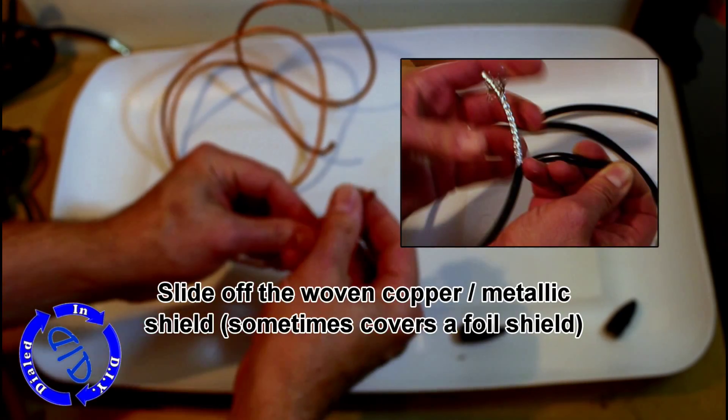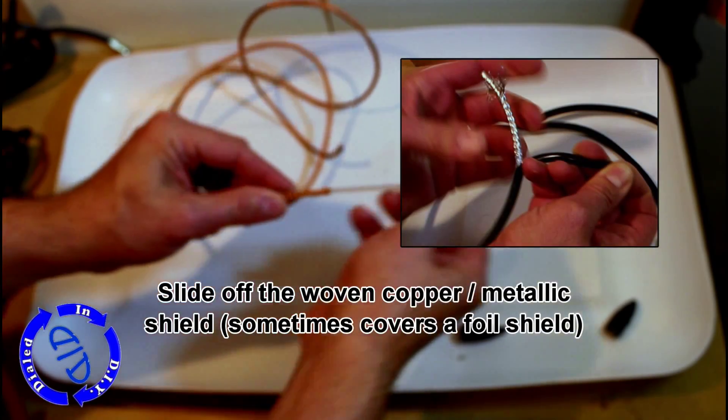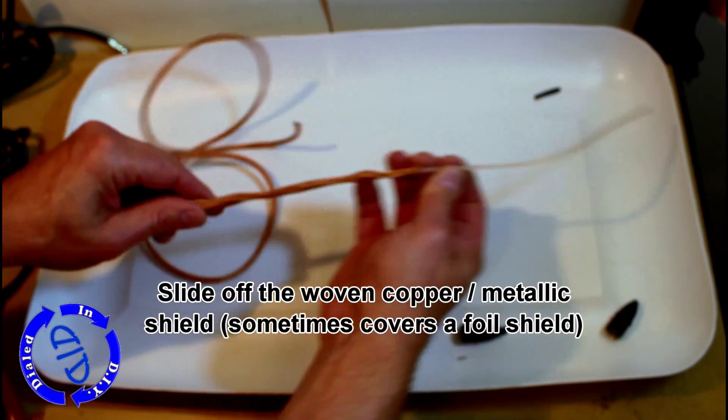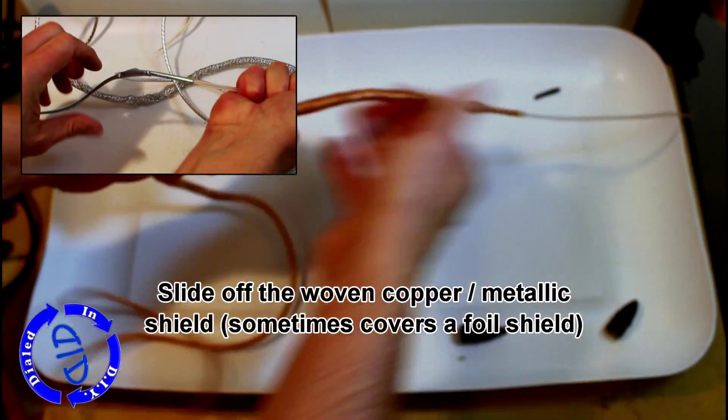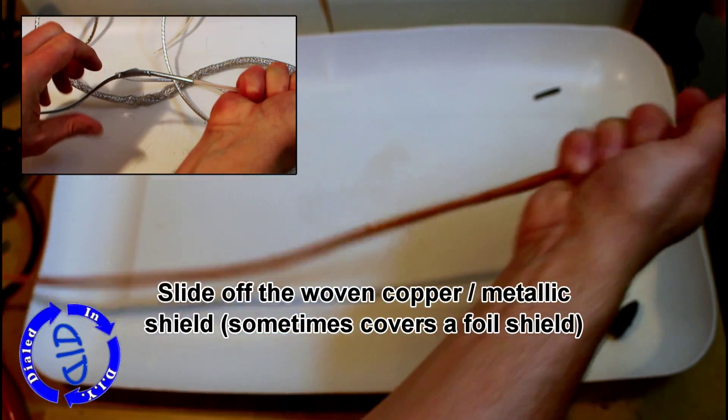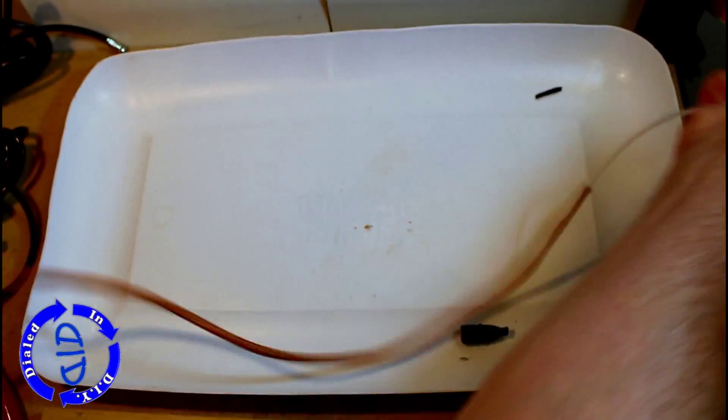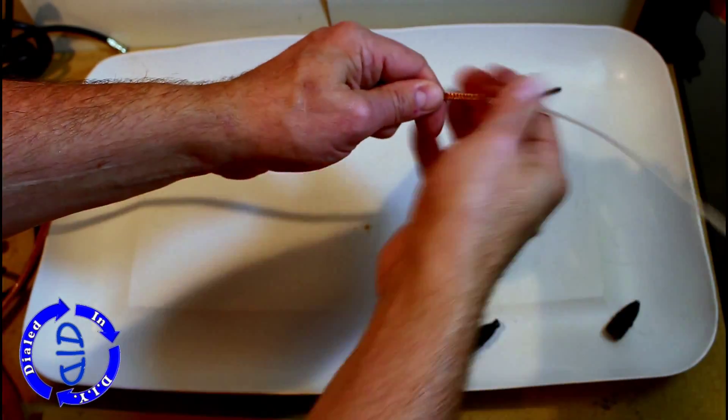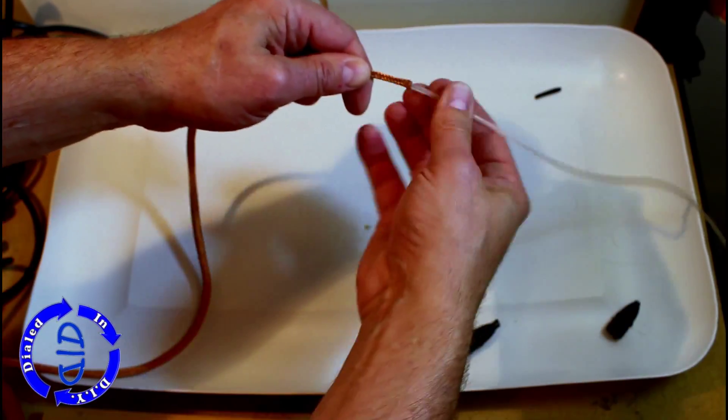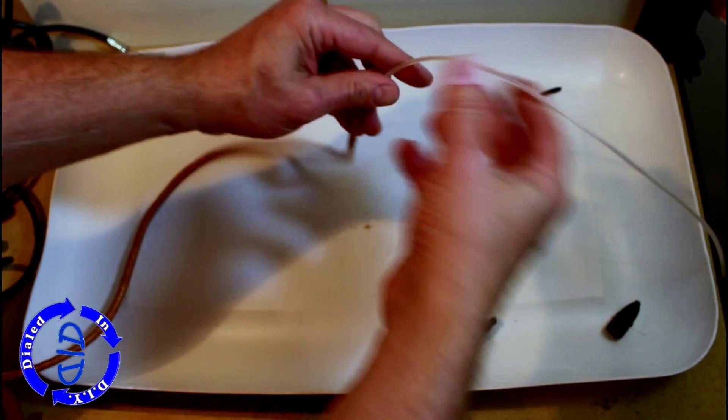This cable has that copper sheath we need to remove. But I also mentioned there is another type of cable - shown in the picture here - where there's more of a metallic mesh covering, typically over a foil wrapping. The nice thing about any of these is if you just start to pull on the plastic core, the sheath will slide off. It's pretty easy to do.